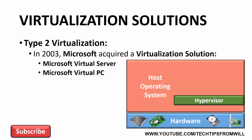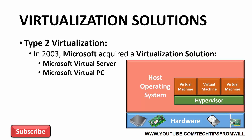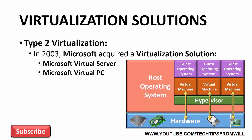With the hypervisor in place, the administrator can then build out virtual machines. Each virtual machine behaves as though it is a completely separate computer, and each virtual machine is assigned its own hardware resources from the hardware layer, such as processor power, RAM memory, and disk space, and even has its own operating system installed. Operating systems that run on a virtual machine are commonly referred to as guest operating systems.